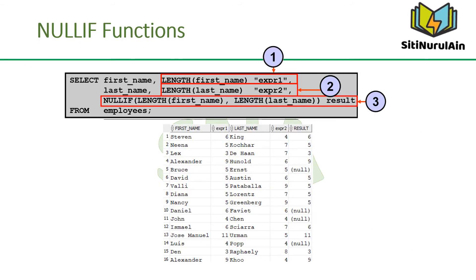The example shown in the slide demonstrates the use of the NULLIF function. In the SQL, the length of the first name in the employees table is compared to the length of the last name in the employees table. When the lengths of the names are equal, a null value is displayed. When the lengths of the names are not equal, the length of the first name is displayed.